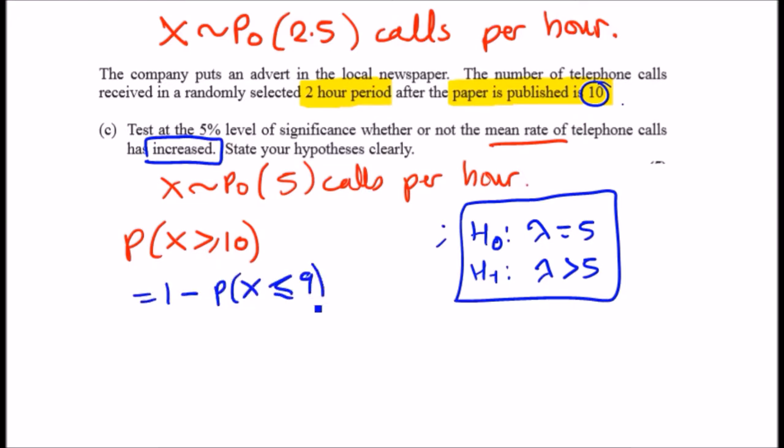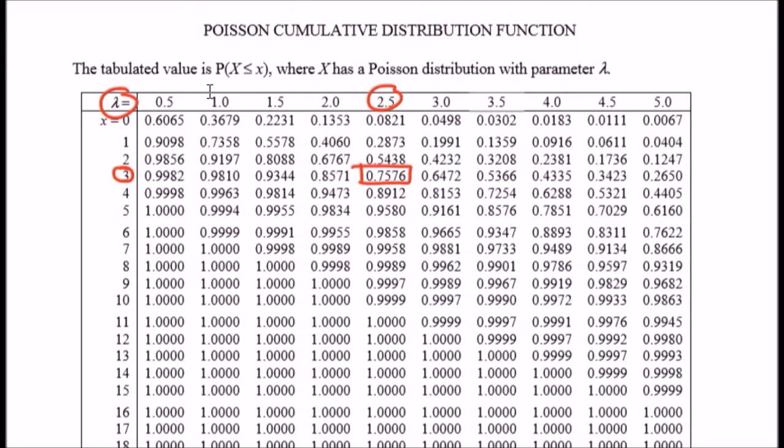Now let's go ahead and look at the tables for Poisson with λ equals 5 and X equals 9. Let's have a look. So λ is 5 over here, perfect, and we're looking for X equals 9.